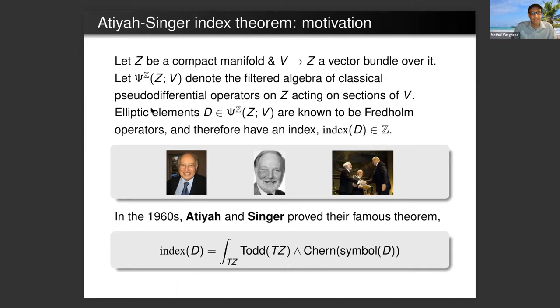And in the 1960s, Atiyah and Singer proved a famous theorem, giving a topological formula for the index of such an elliptic pseudodifferential operator. It's some characteristic class on the tangent bundle where it's the term character, the symbol of the right. And here they are receiving the Abel Prize in 2004, I think.